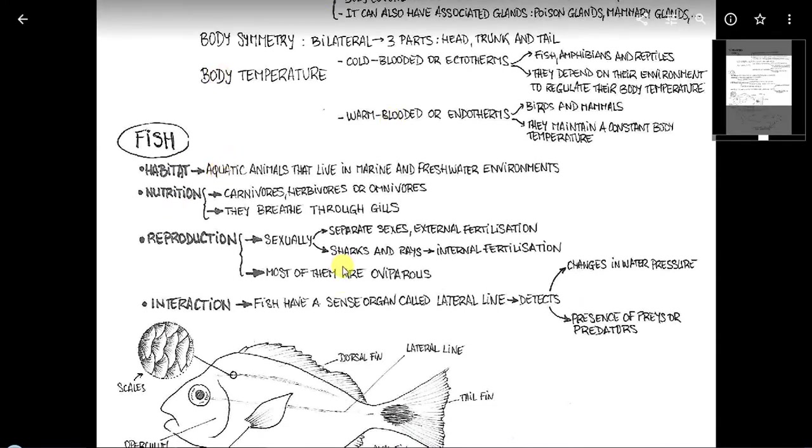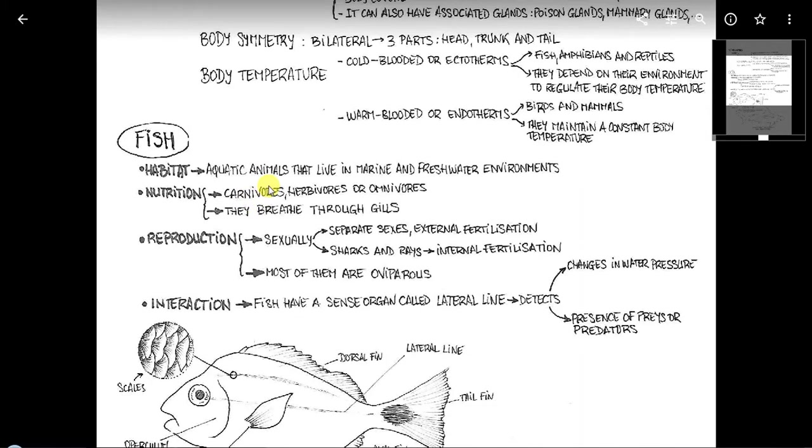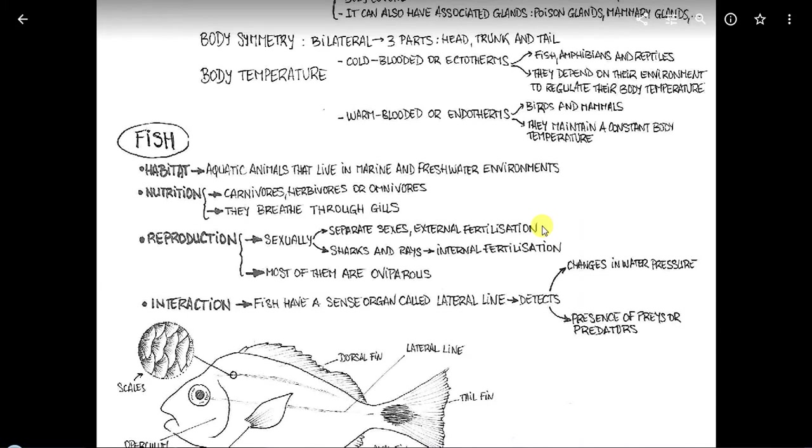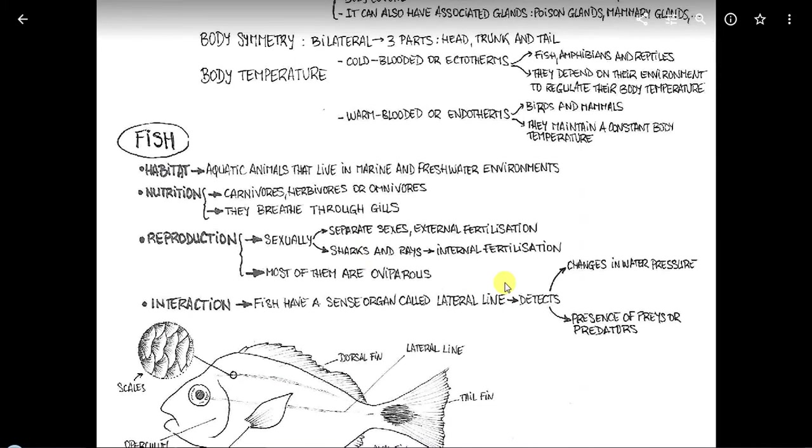Es decir, este grupo de animales son acuáticos porque viven en medio acuoso, puede ser marino o agua dulce. Pueden ser carnívoros, herbívoros u omnívoros y respiran todos mediante branquias. La reproducción es sexual, hay sexos separados y normalmente la fertilización es externa. Es decir, la hembra pone los huevos en un sitio, debajo de una alga por ejemplo, y llega al macho y lo fecunda. Pero todo externo. Excepto en el caso de tiburones y rayas, que la fertilización es interna. Y muchos de ellos son ovíparos. Digo muchos de ellos porque hay casos de tiburones que son ovivíparos, por ejemplo. El huevo está dentro de la madre y cuando sale la cría parece que la está pariendo, pero en realidad es que el huevo eclosionó o se rompió dentro de la madre.